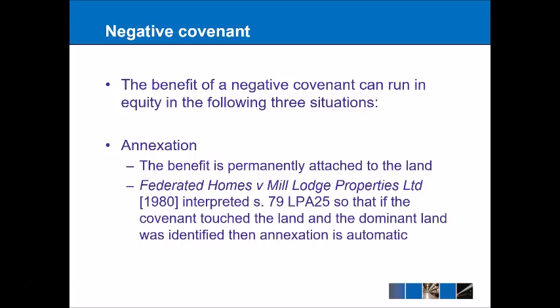The benefit of a negative covenant can run in three particular situations. The first is annexation, which is possibly the most common — the benefit is permanently attached to the land, so it doesn't matter who the owner is, they will always get the benefit because it's annexed to the land itself. The case law in this area was tidied up by the Federated Homes case, which interpreted Section 79 of the Law of Property Act 1925 so that if the covenant touched the land and the dominant land was identified, the annexation would be automatic.